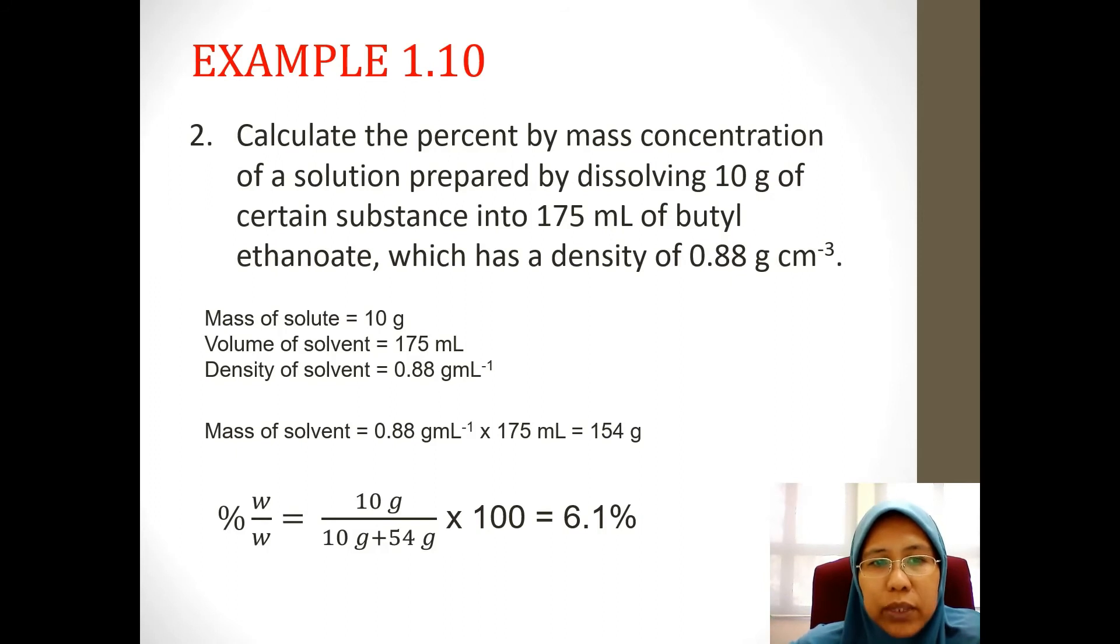So you have two types of data and we need mass for percentage. So we need to find the mass of solvent by using the density. We get the mass of solvent 154. And then we insert into the formula and get the answer 6.1%. This will give you two marks.